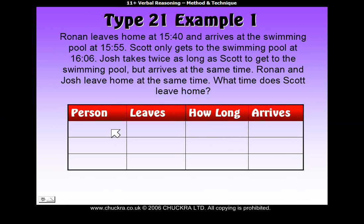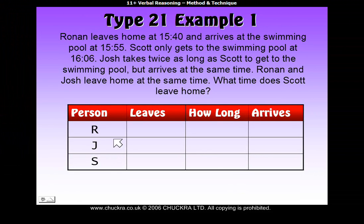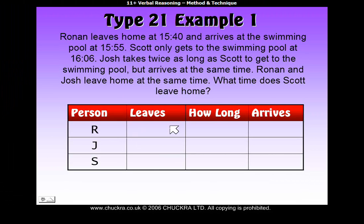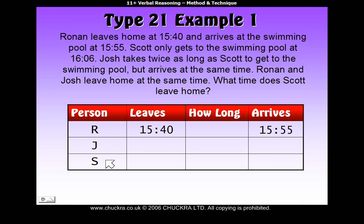We've put R for Ronan, J for Josh, and S for Scott. Then we look at the information we've been given and fill it in. Ronan leaves at 15:40 and arrives at the swimming pool at 15:55. Scott only arrives at 16:06.